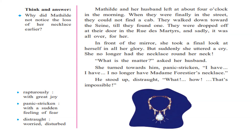Suddenly she uttered a cry — she no longer had the necklace around her neck. She had lost the necklace — the one borrowed from her friend. Her husband asked, 'What is the matter?' He was surprised; everything had gone exactly as she wanted, so why was she crying? She turned toward him, panic-stricken — with a sudden feeling of fear — and said, 'I no longer have Madame Forestier's necklace.' He stood up, distraught — worried and disturbed — saying, 'What? How? That's impossible!'